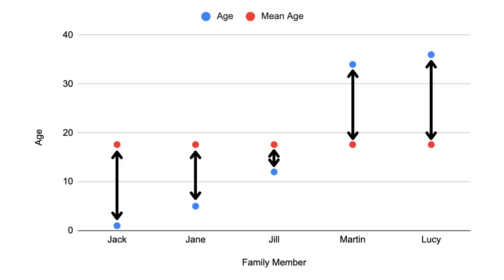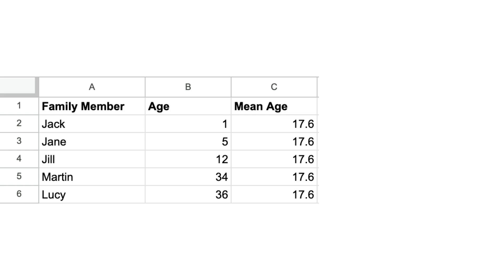Now we simply calculate the difference in age between each family member and this average family age by subtracting the average family age from the age of each family member. So the youngest child is 1, meaning that this child is 16.6 years younger than the average age of the family, while the mother, who is 36 years old, is 18.4 years older than the average age of the family.